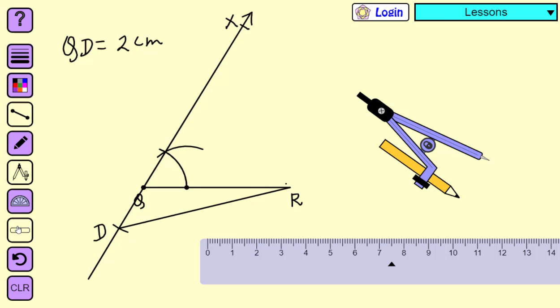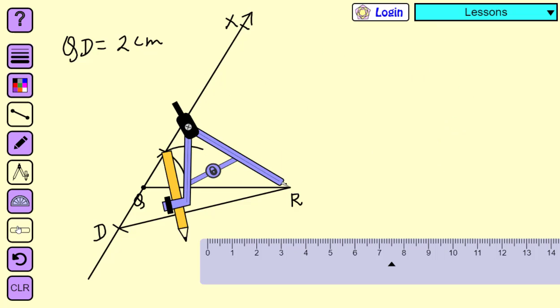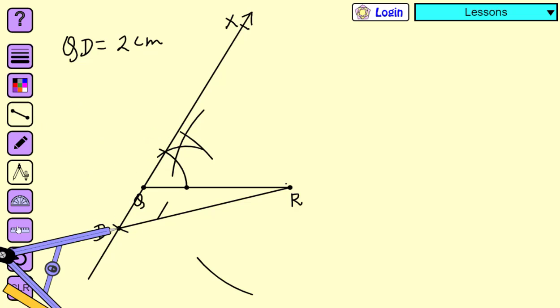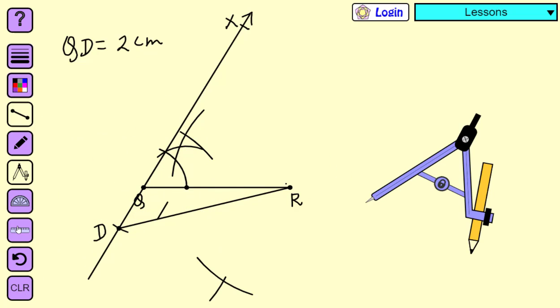We will construct perpendicular bisector of line segment DR. Let us do it quickly. Here, PB is perpendicular bisector of line segment DR.